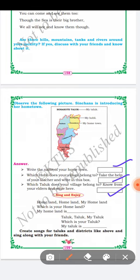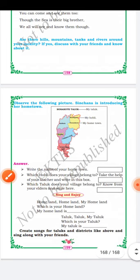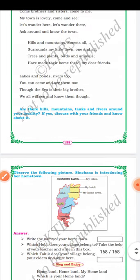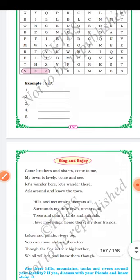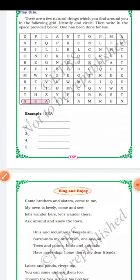Here is also a small rhyme: Homeland, homeland, my homeland — which is your homeland? My homeland is dash — write your homeland here. Then: Taluk, taluk, my taluk — which is your taluk? Write your taluk's name here. This is all about your lesson. Complete all activities and fill in the correct answers in the boxes provided. Thank you for watching.